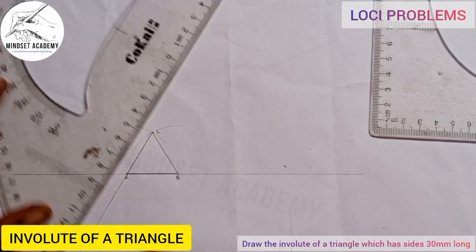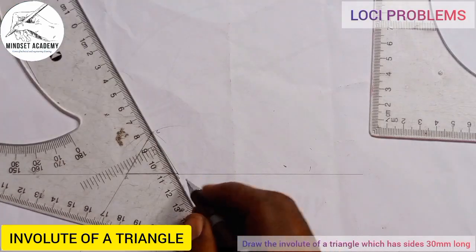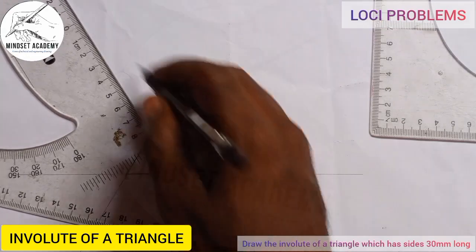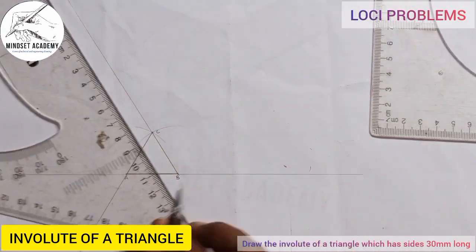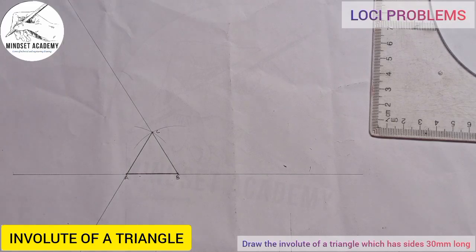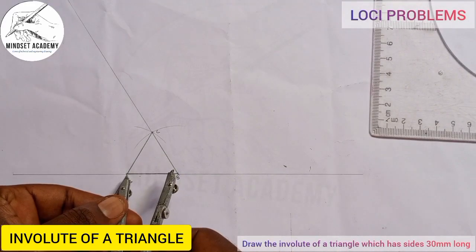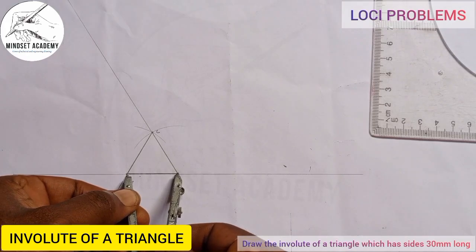Also I'm going to extend BC in this manner. With the help of my compass, the first radius AB - you can see what I'm doing - then I'm going to draw an arc this way.